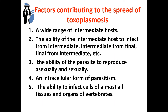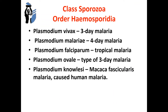The next representatives of protozoa are individuals of Plasmodium, or the hemosporidia. There are five species of Plasmodium which are parasites for humans: Plasmodium vivax, the pathogen of three-day malaria; Plasmodium malariae, the pathogen of four-day malaria; Plasmodium falciparum, the pathogen of tropical malaria; Plasmodium ovale, the pathogen of a type of three-day malaria; and Plasmodium knowlesi, the pathogen of malaria of macaca fascicularis, but it can also cause malaria in humans. Malaria is an anthroponosis, widespread everywhere, especially often in countries with tropical and subtropical climates.